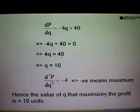Hence the value of q that maximizes the profit is equals to 10 units from here.